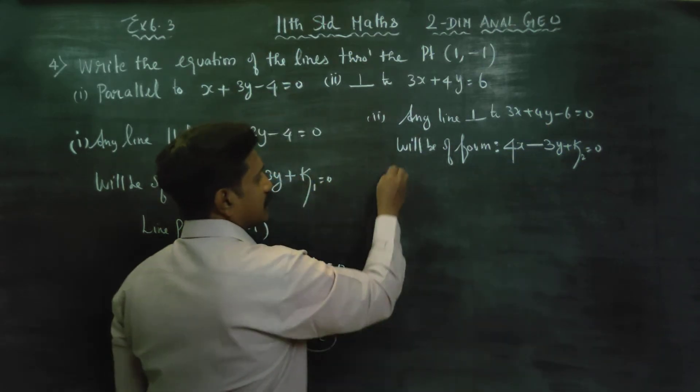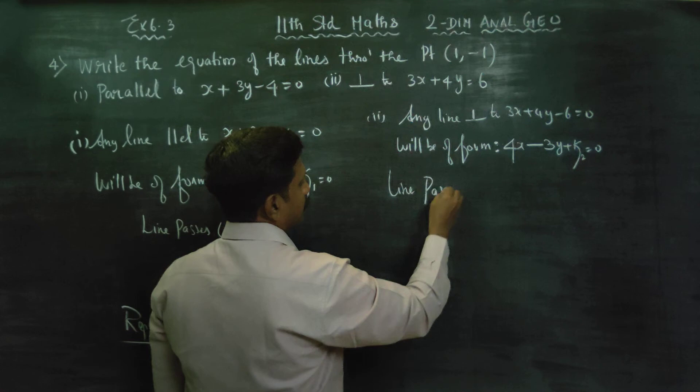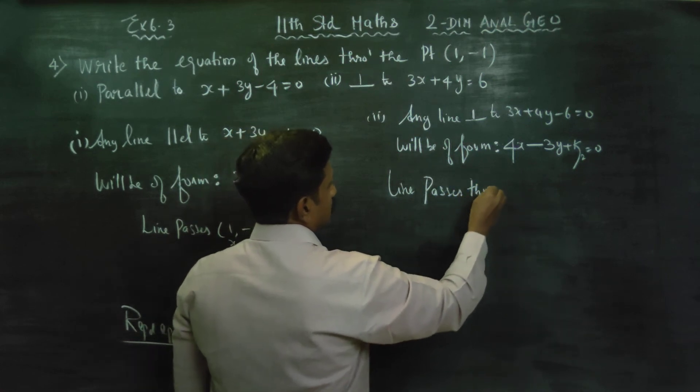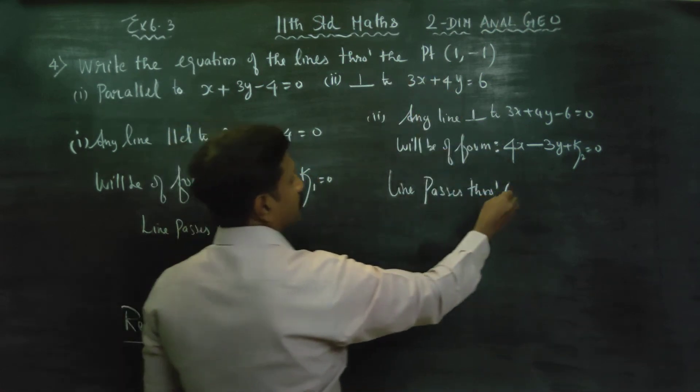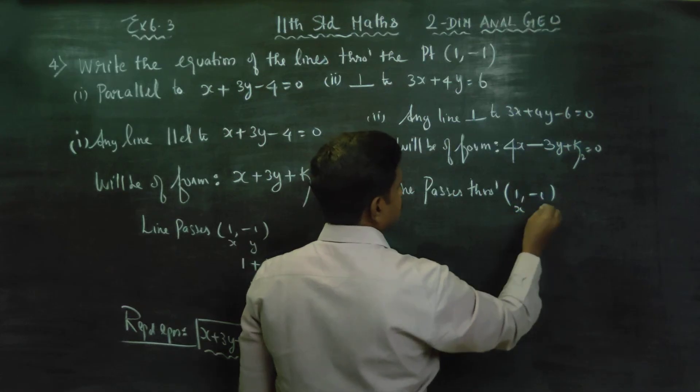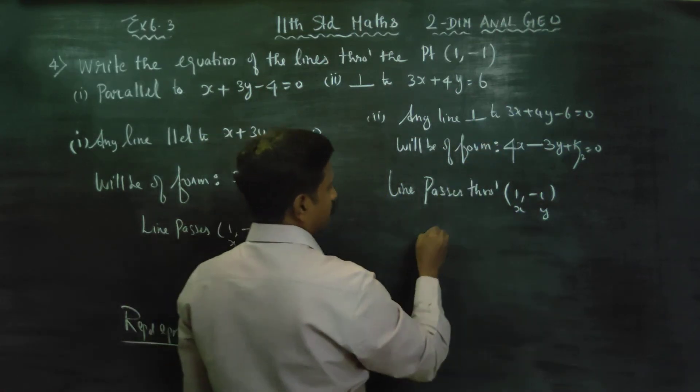Again, the line passes through (1, -1). Instead of x and y, just substitute 1 and minus 1. Therefore, you will be getting 4 times 1 minus 3 times minus 1 plus k2 equals 0.